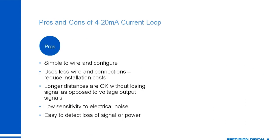Now that we understand what makes up the 4-20 loop, let's talk about why people choose to use it. The number one reason is that it's simple to wire and configure. Because you're just making one big loop with your wires, all devices only have two pins — a plus and a minus. If you have a problem or want to trace how the circuit works, you just walk your wires around the loop making sure everything's connected. It also uses fewer wires and connections than other options, such as a five-wire RS-485 Modbus device with complicated serial bus wiring.